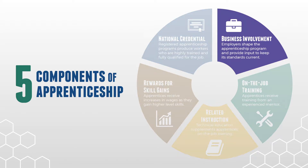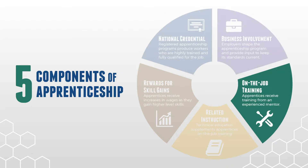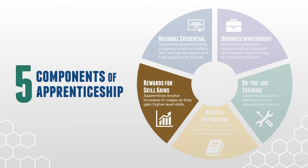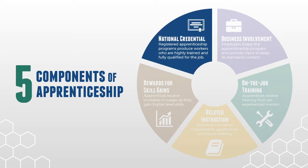Business Involvement: Employers shape the apprenticeship program and provide input to keep its standards current. On the Job Training: Apprentices receive training from an experienced mentor. Related Instruction: Technical education supplements apprentices' on-the-job training. Rewards for Skill Gains: Apprentices receive increases in wages as they gain higher-level skills. National Credential: Registered apprenticeship programs produce workers who are highly trained and fully qualified for the job.